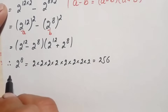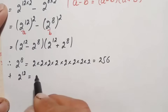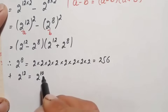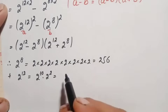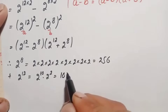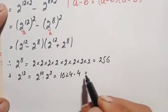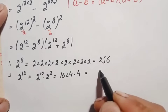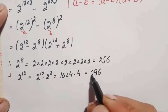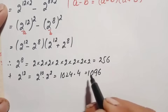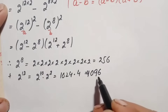Next, we find 2 raised to power 12 by writing it as 2 raised to power 10 times 2 raised to power 2. Now 2 raised to power 10 is 1024 — a very famous number — and 2 raised to power 2 is 4. Multiplying 1024 by 4: 4 times 4 is 16, carry 1; 4 times 2 is 8, plus 1 is 9; 4 times 0 is 0; 4 times 1 is 4. So 2 raised to power 12 is 4096.